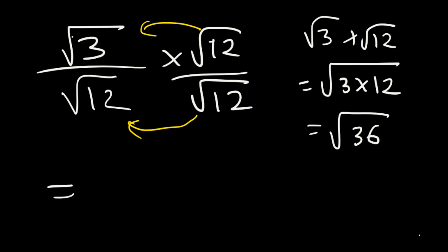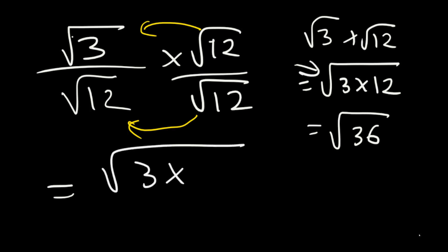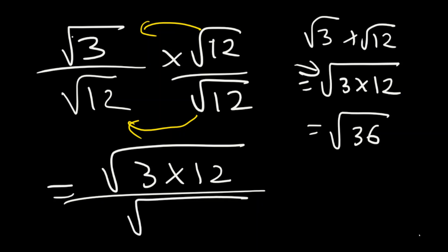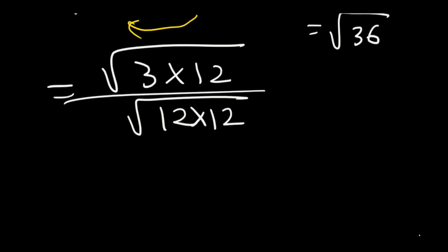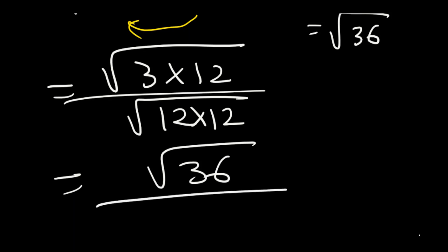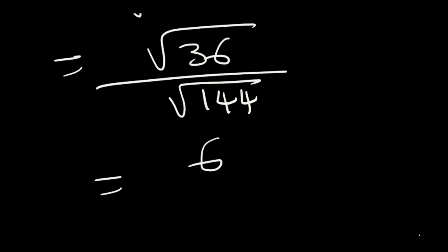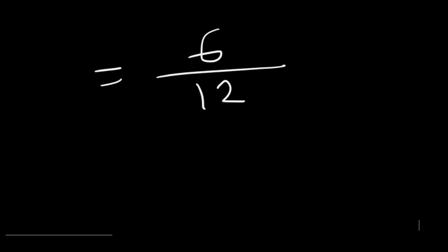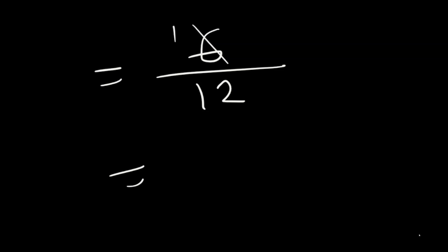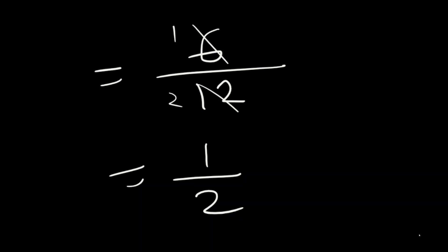You don't have to skip these steps — indicate all of them. So we write root of three times 12 divided by root of 12 times 12. We know three times 12 is 36, so it's root of 36, and 12 times 12 gives root of 144. Root of 36 is 6 and root of 144 is 12. Simplifying 6 over 12, the answer is one over two.